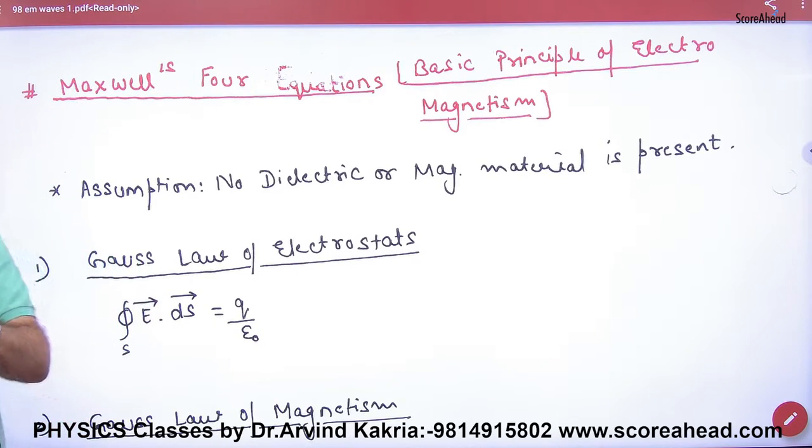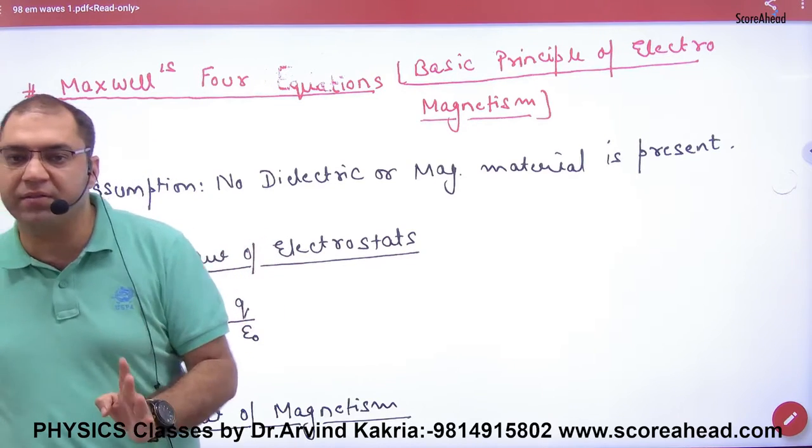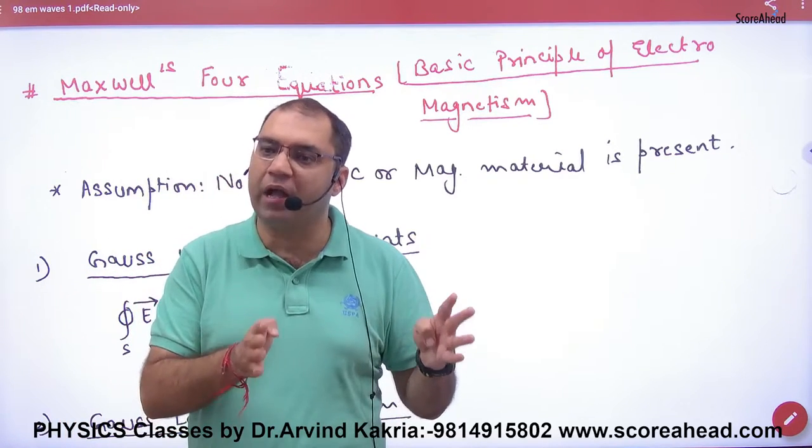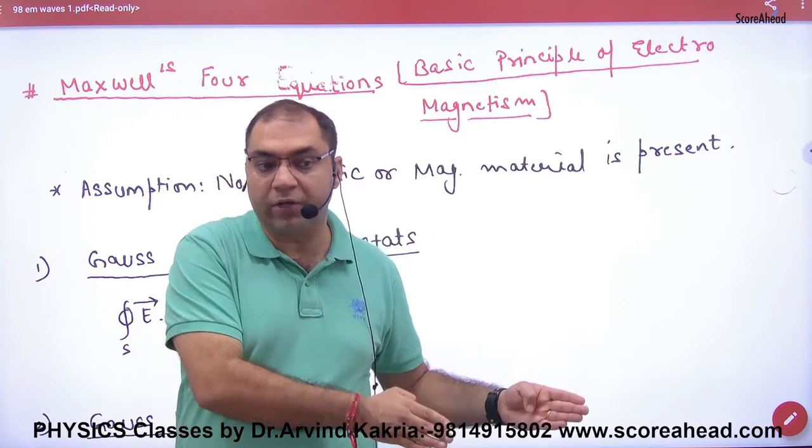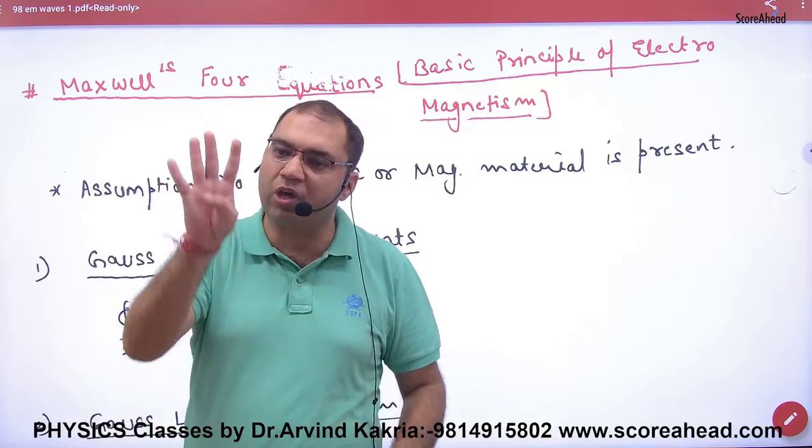Maxwell's four equations are Maxwell's basic principle of electromagnetism. As we have worked in Volume 1 with electrostatics and EM waves, this whole electromagnetism can be represented by four equations.